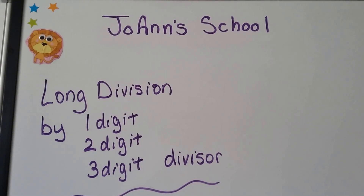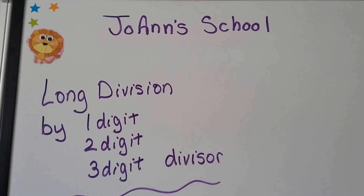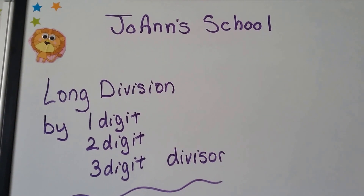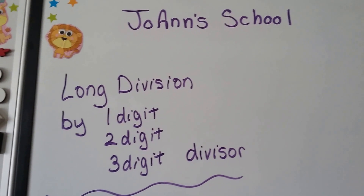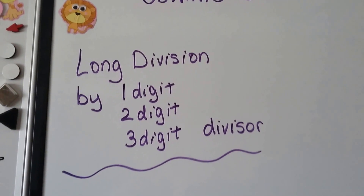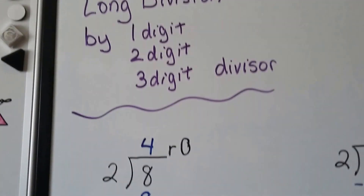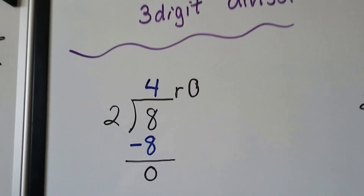This is a long division by a one-digit, two-digit, or three-digit divisor, and some are going to have remainders and some won't. So let's start at the very beginning.